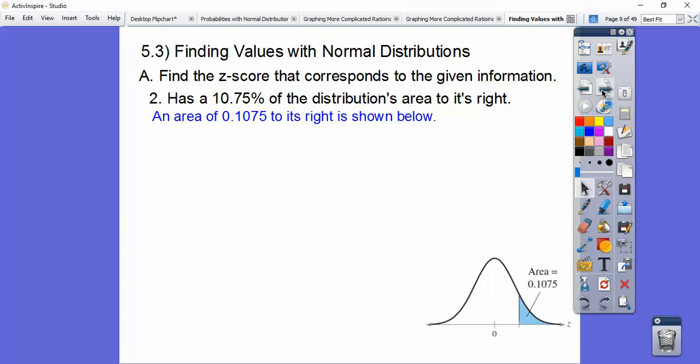Here's the next one. It has 10.75% of the distribution to its right. So the area to the right is 0.1075. That means the area to the left is 1 minus that. So if we do 1 minus that, we get 0.8925.